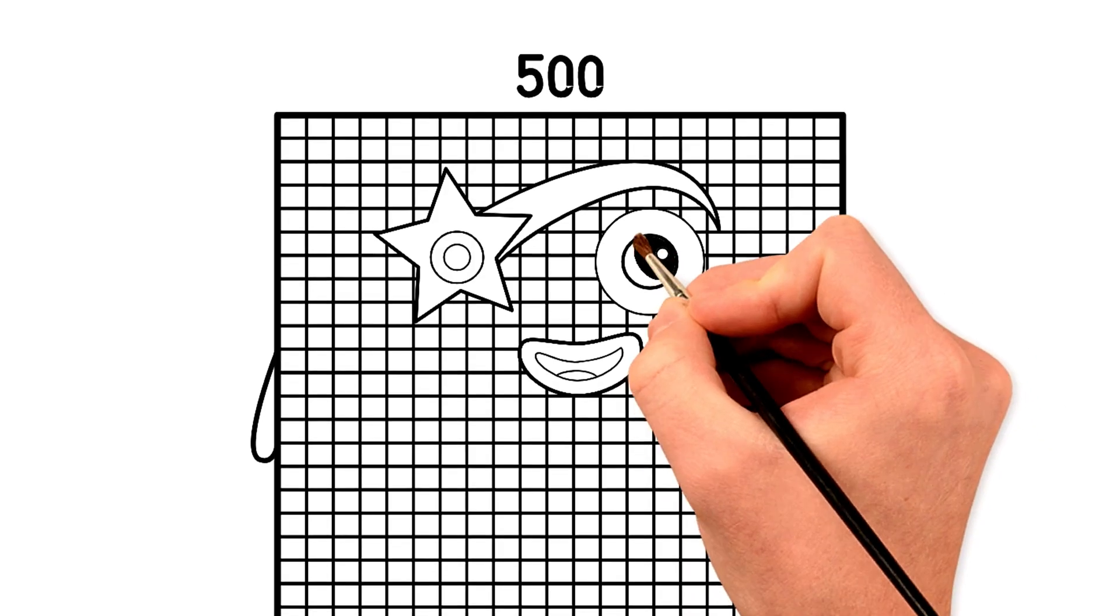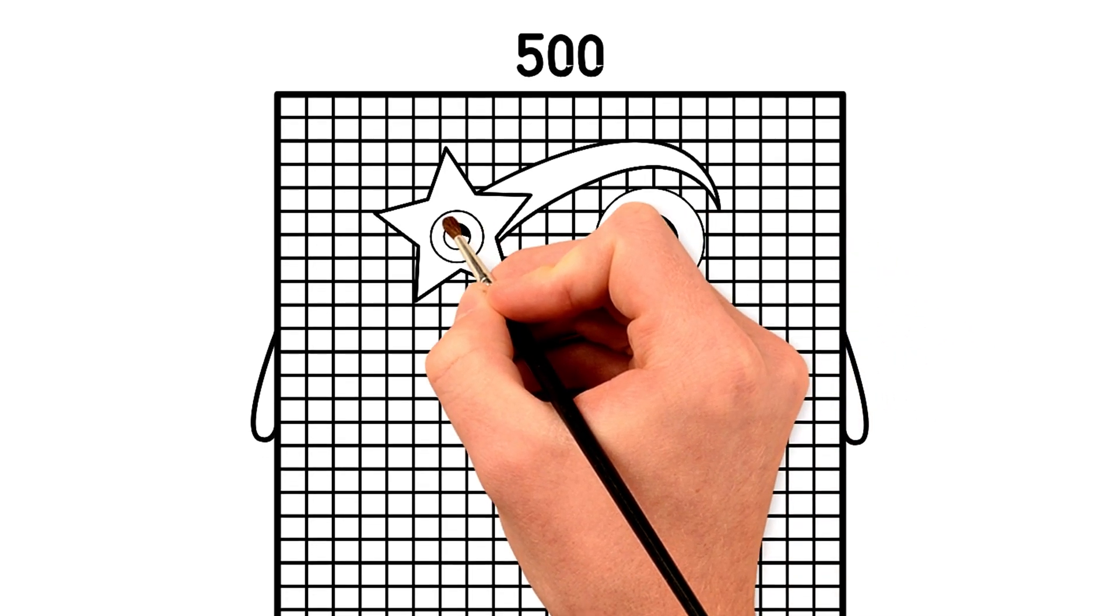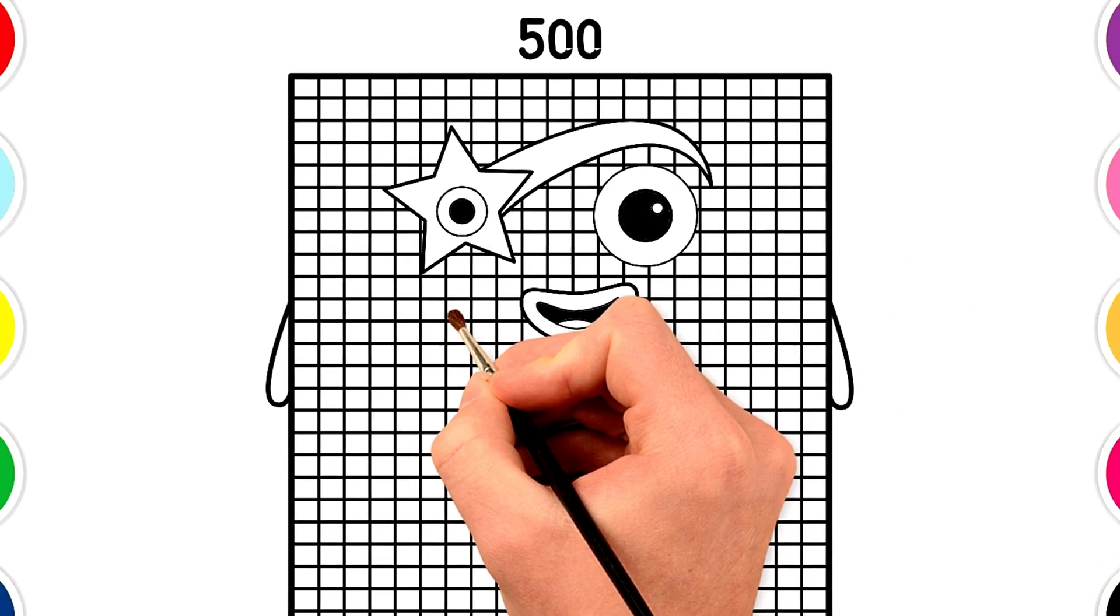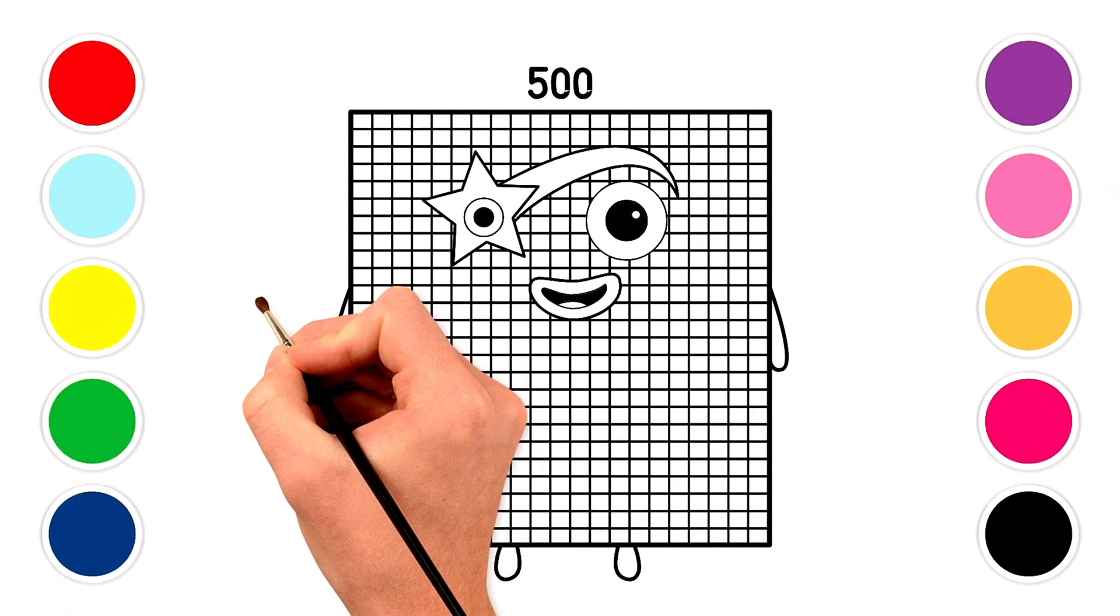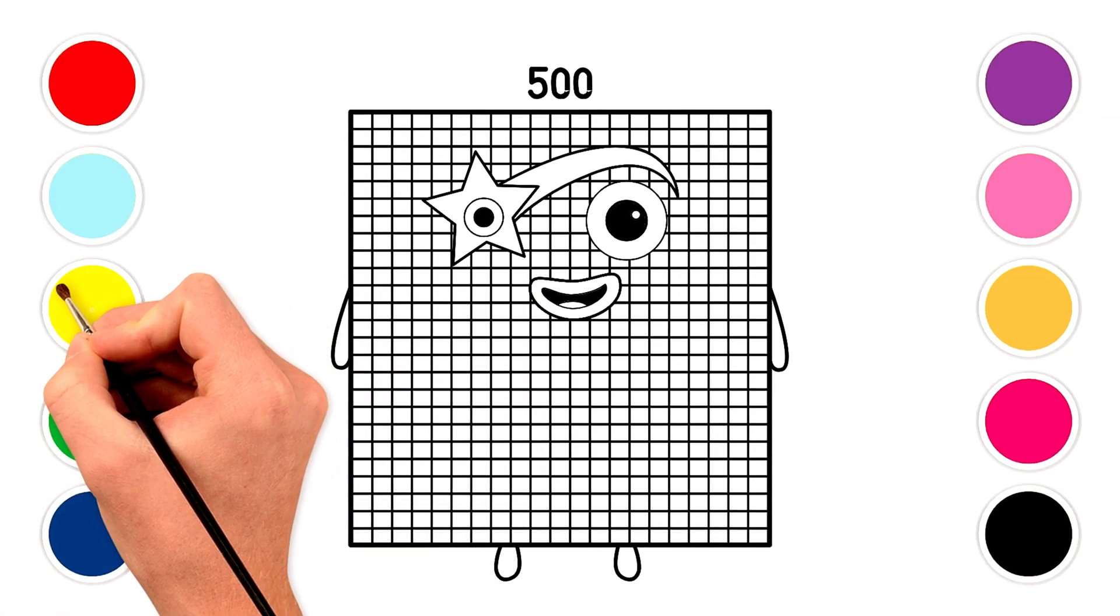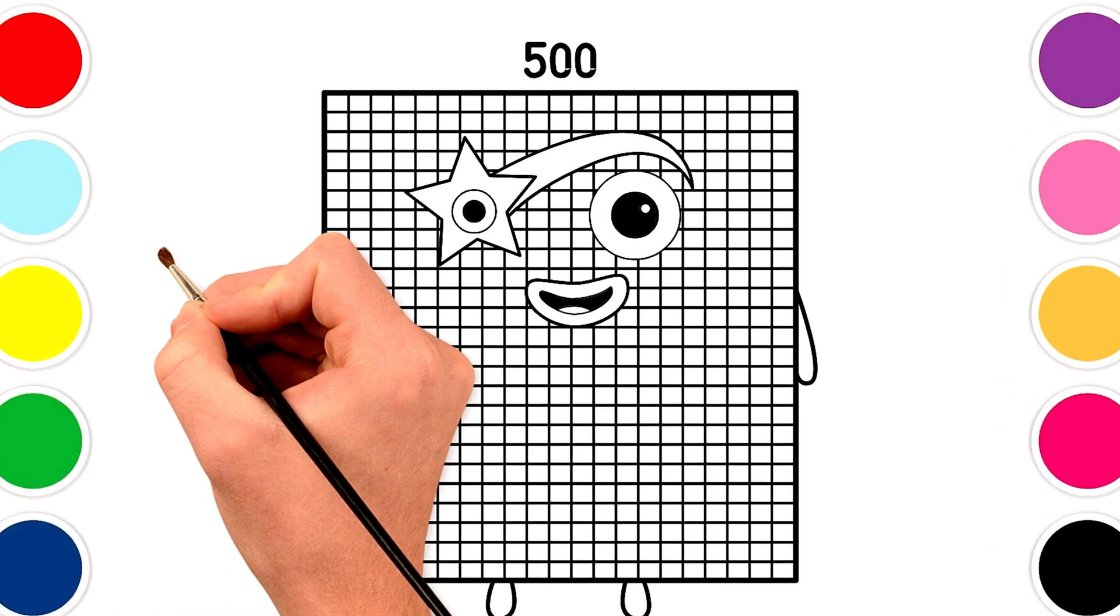Pick up your black crayon. Let's carefully color the pupils of his eyes. Nice dark circles. Color the inside of his mouth black, too. Can you point to the circles? That's right, his eyes. Now, clap two times for his two eyes. Clap, clap.